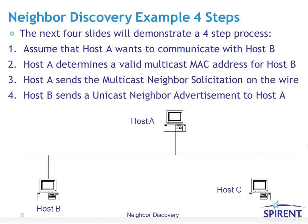Let's look at a Neighbor Discovery example and the four-step process. Assume that host A wants to communicate with host B. Step one: host A wants to communicate with host B. Step two: host A needs to determine a valid multicast MAC address for host B — a MAC address that pretty much only host B is listening to, as opposed to sending to broadcast as was the case with ARP in IPv4. Step three: host A sends a multicast Neighbor Solicitation on the wire, and only host B or a very limited number of hosts will be listening. Step four: host B sends a unicast Neighbor Advertisement to host A.